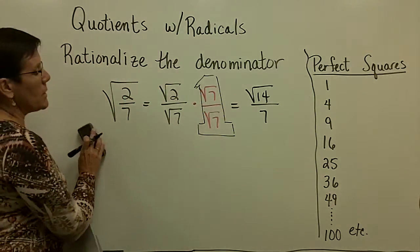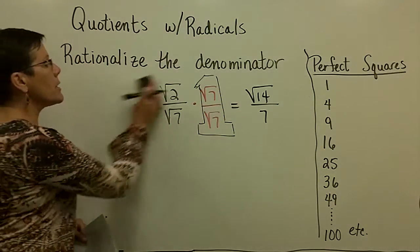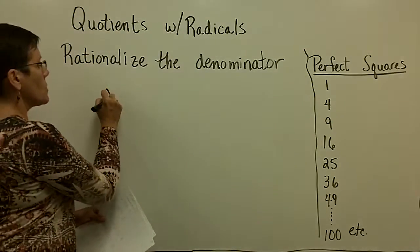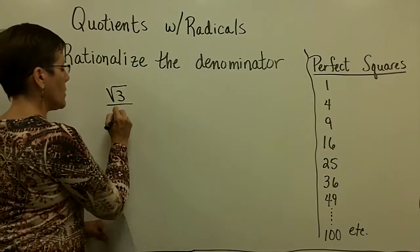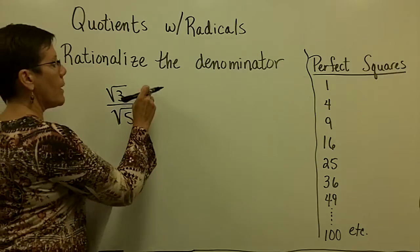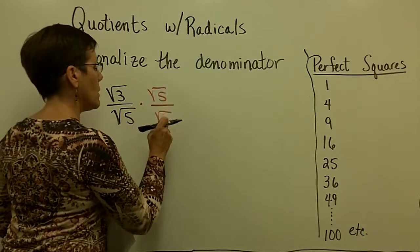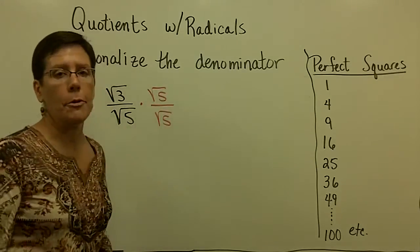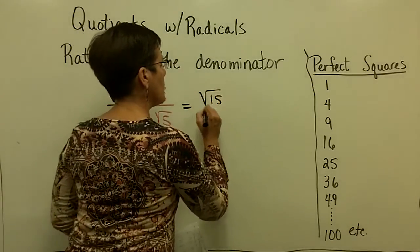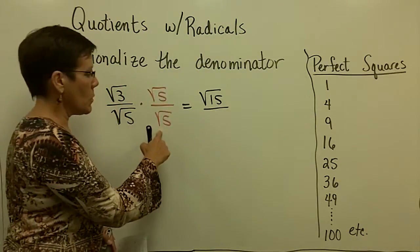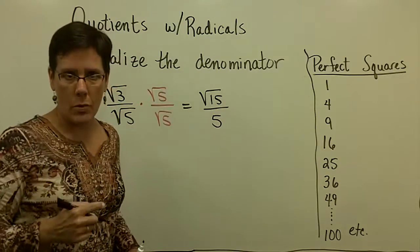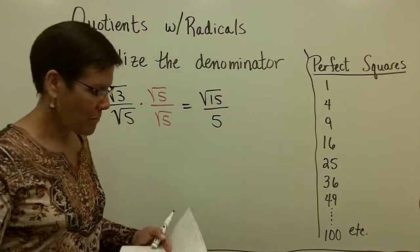If the number in the denominator is not a prime number, it becomes a little bit more challenging, but not a lot. Let's do one more. So the square root of three over the square root of five, and I would multiply by one in the form of the square root of five, top and bottom. Upstairs, that would become the square root of 15. But downstairs, the square root of something times the square root of something is that very same something. The square root of five times the square root of five is five.